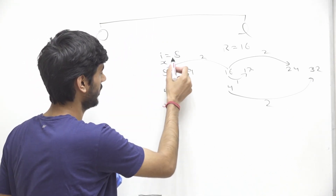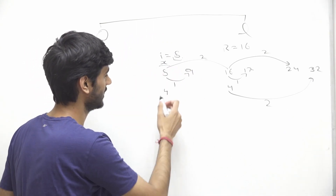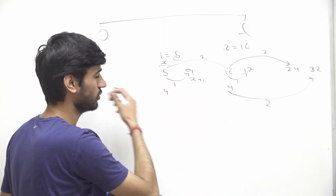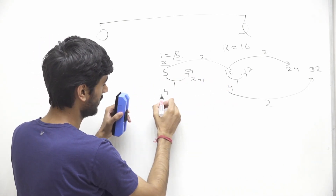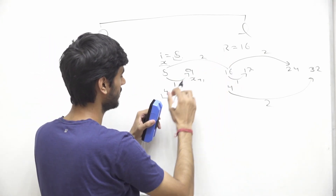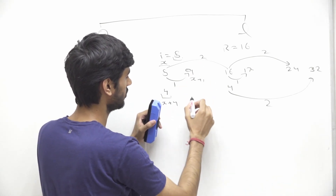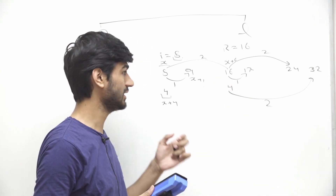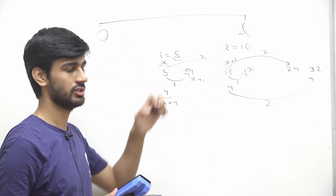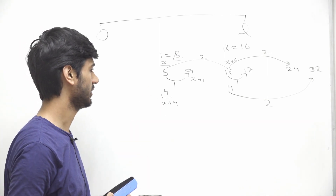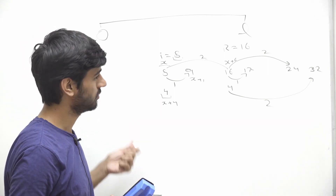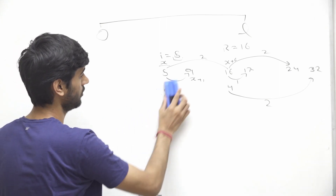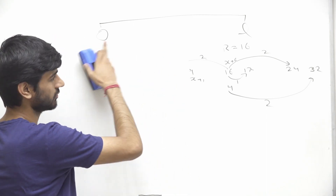So if the minimum number of coins required to reach 8 is x, then we can reach 9 using x plus 1 coins. And to reach 16, we first require four coins to register, so x plus 4, and then plus 2 gives us x plus 6. So we can reach 16 using x plus 6 coins, where x is the minimum number of coins required to reach 8. These are the three options we have, and we need to find the minimum number of coins to reach from 0 to L.